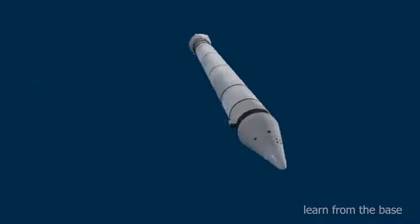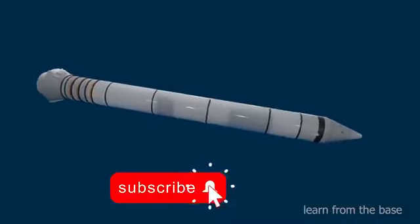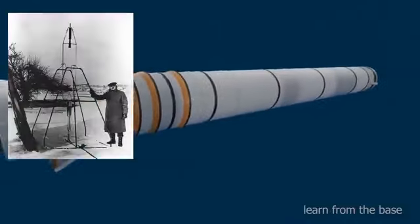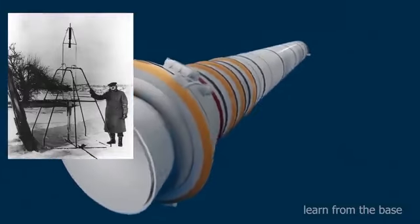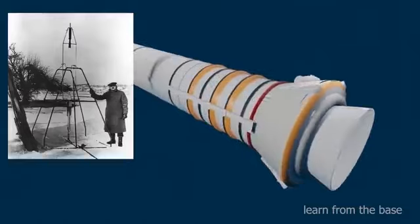Rocket engines are one of the most difficult and complex machinery made by mankind. The first working liquid rocket engine was developed by an American scientist, Dr. Robert Hutchings Goddard in 1926. That rocket traveled 45 feet during 2.5 seconds.